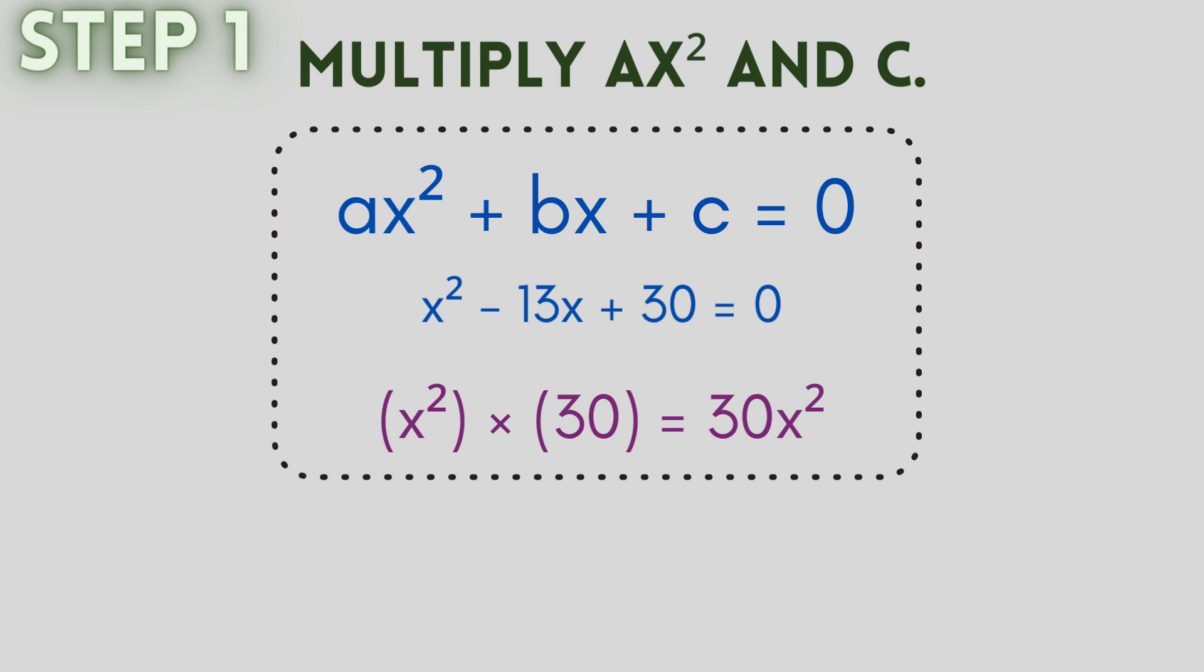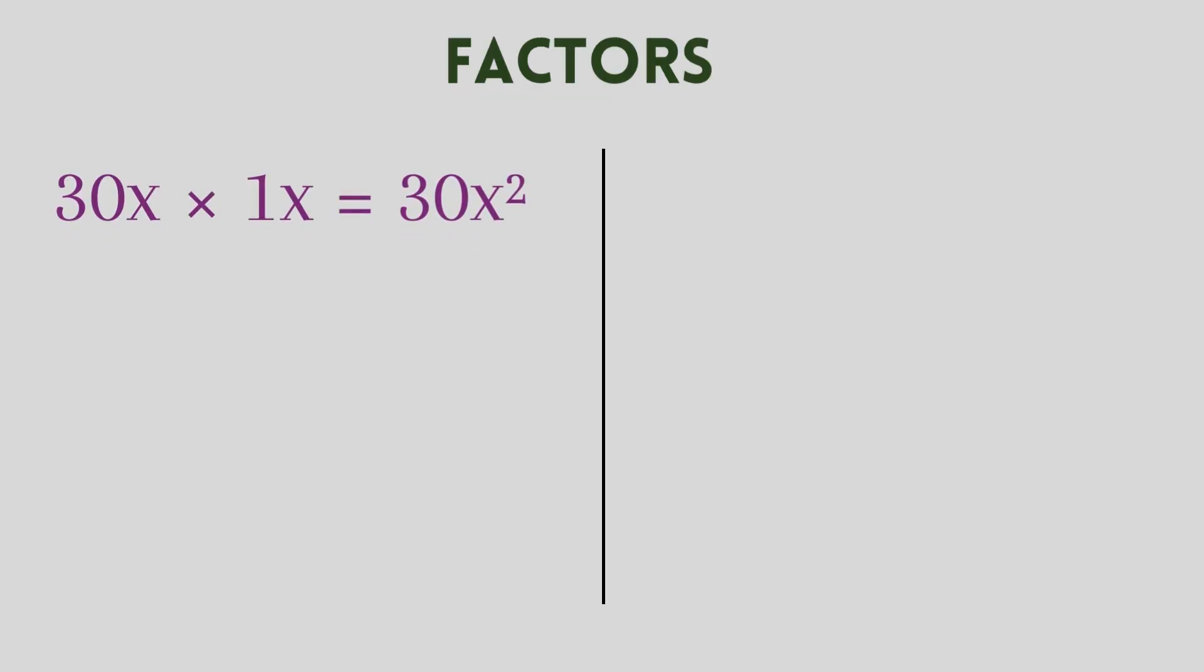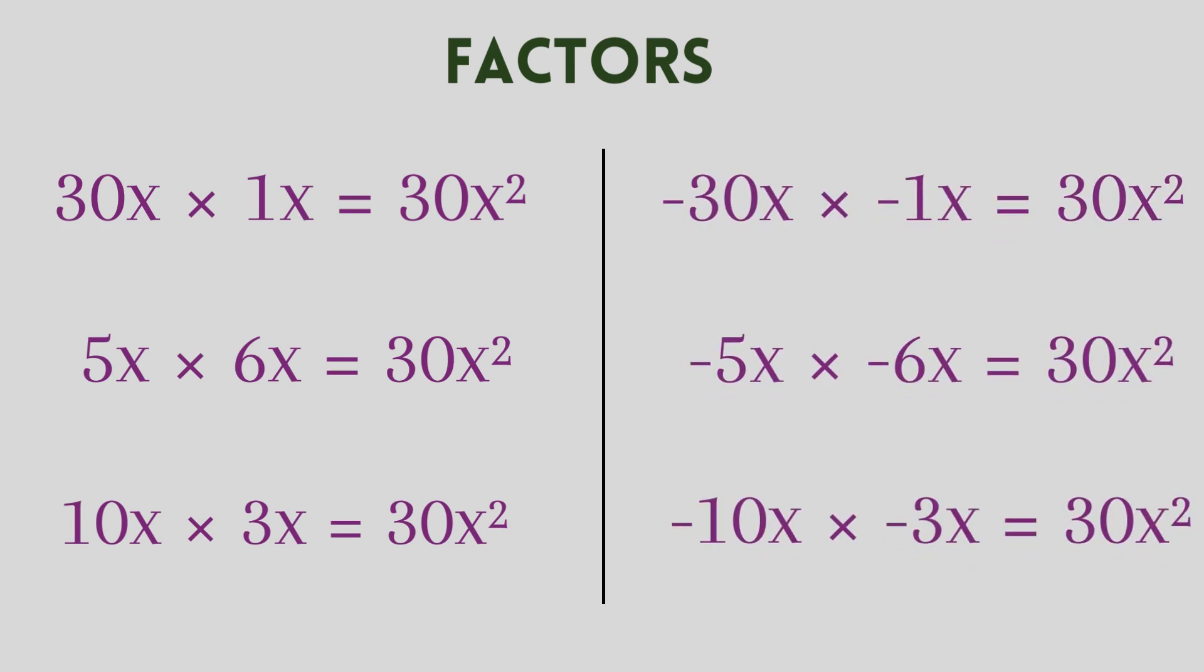The two factors resulting in the product 30x² must each contain a variable and a constant compulsorily. To understand, let us take 30x² and find its factors. We see the factors are 30x and 1x, 5x and 6x, 10x and 3x. Similarly, minus 30x and minus 1x, minus 5x and minus 6x, minus 10x and minus 3x. All these combinations when multiplied give us 30x².